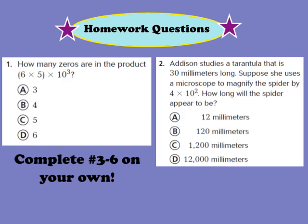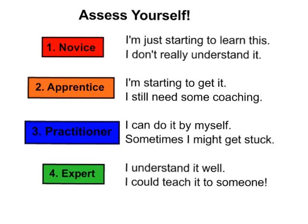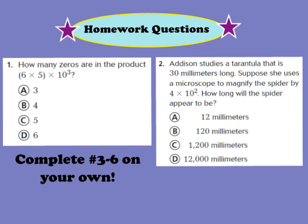Let's take a look at our homework questions for tonight. I would like you to complete question number 1 and question number 2, as well as numbers 3 through 6, found on page 12 in your GoMath workbook. Don't forget, somewhere on your homework page you need to assess yourself — are you a 1 (novice), 2 (apprentice), 3 (practitioner), or 4 (expert)? I hope you guys have a great evening, and I look forward to seeing you in class tomorrow.